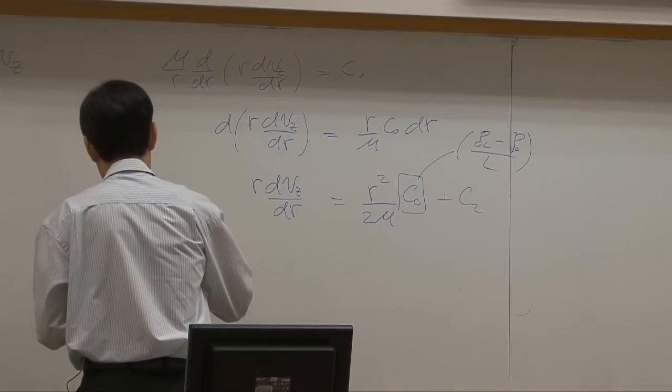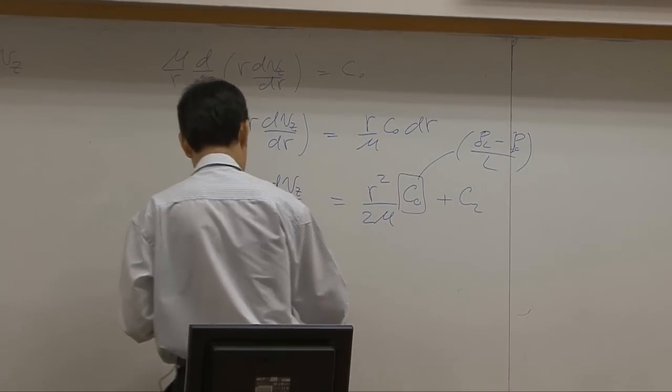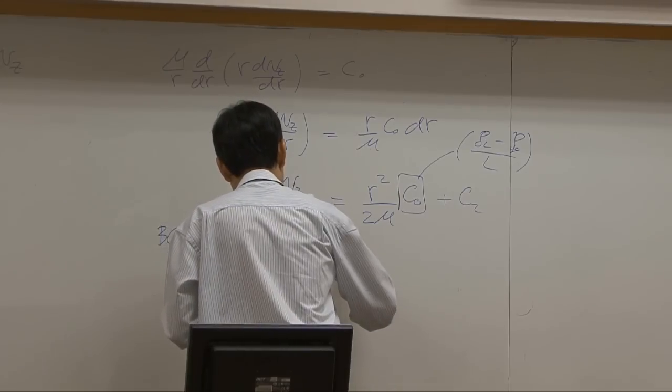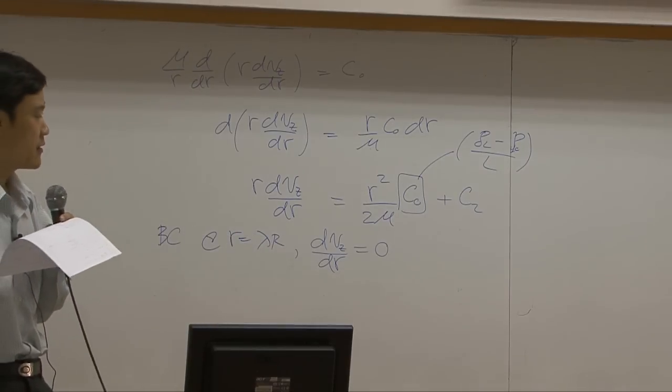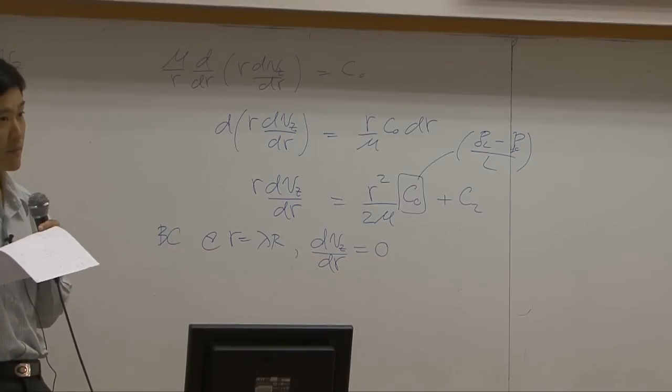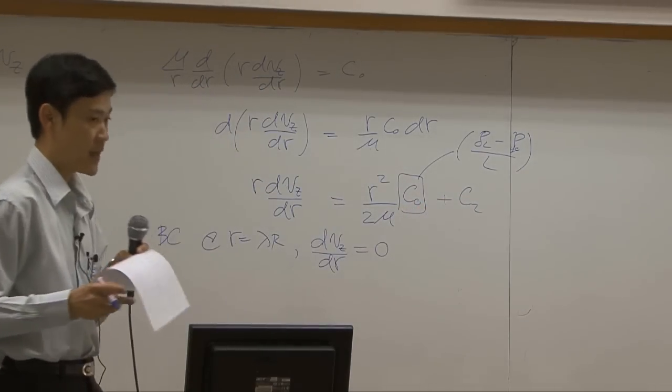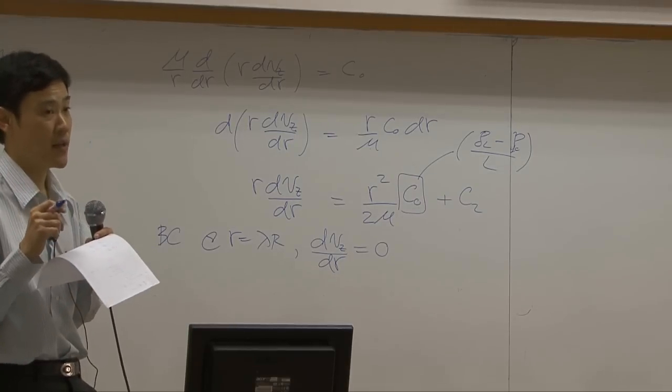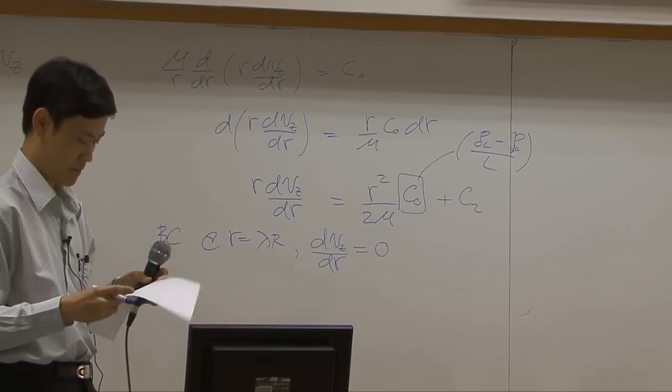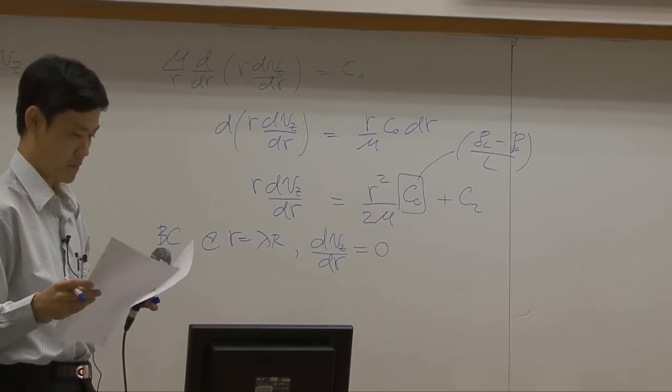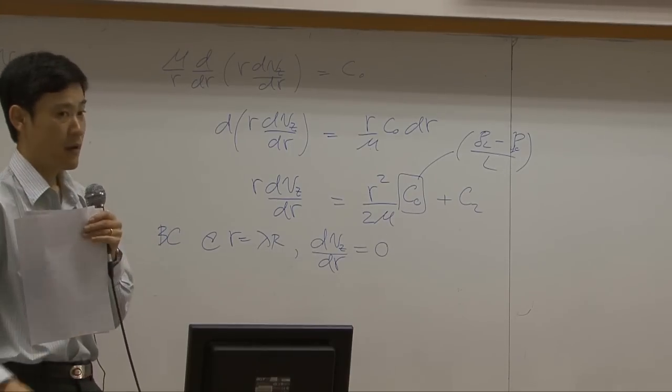And that would be something like this. The boundary would be at r equal to lambda, dVz by dr equal to 0, because the velocity profile is maximum at that point, okay? By using that, you can solve for C2. And then, the rest would be the same as what we did earlier.